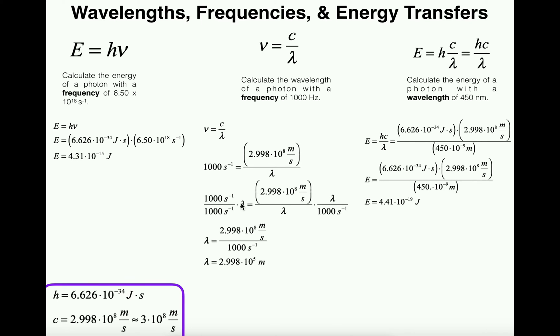Once you manipulate this algebraically you will see that our wavelength or lambda equals 2.998 × 10⁸ meters per second divided by 1000 per second. When you divide this out you get that the wavelength is 2.998 × 10⁵ meters.